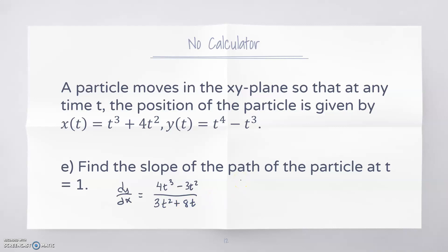At t = 1, that would be 1/11, so the slope of the path is 1/11 at that point.